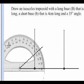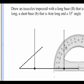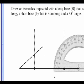The next thing to do is to draw another 35 degree angle at the other end of the long base. And again, I'm drawing the line longer than I need by drawing it past the dotted line I drew before.